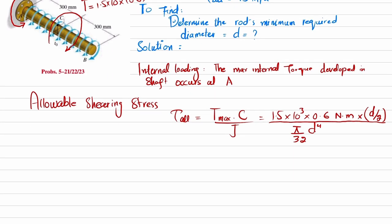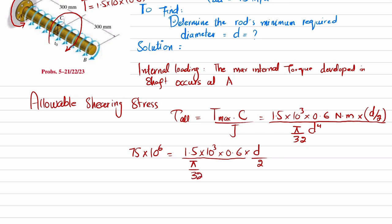The allowable shearing stress given in the question is 75 megapascal, so 75 × 10⁶ equals 1.5 × 10³ multiplied by 0.6 multiplied by (d/2), divided by (pi/32 × d⁴).